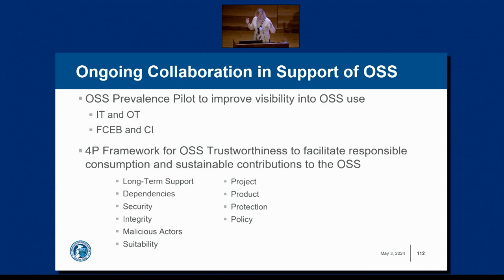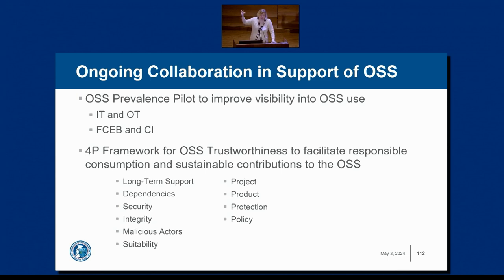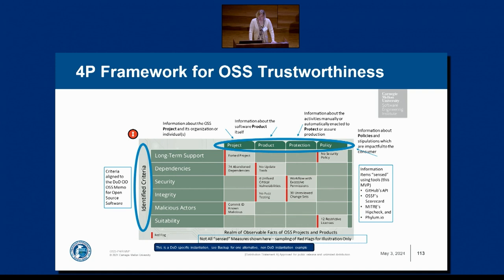In conjunction with that, we're working with Carnegie Mellon Software Engineering Institute on a 4P framework for determining trustworthiness of various packages and libraries. The four Ps are: project, product, protection, and policy — with multiple dimensions for assessment. There are two versions: a DOD version and a civilian version, both being published. A report with a full description of what to do and how will go public in the next couple of weeks.